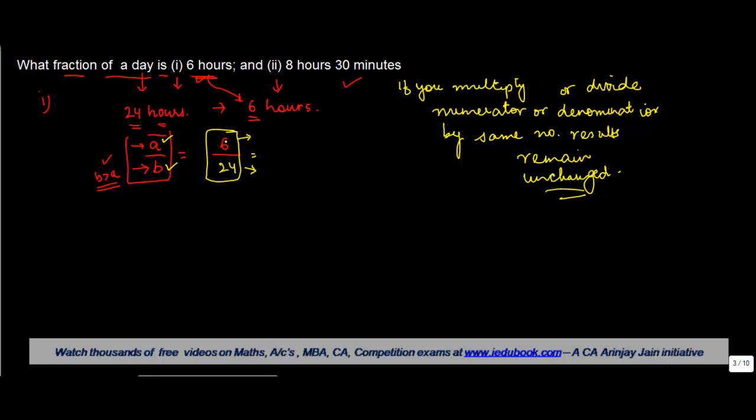If you notice these two numbers, both these numbers are divisible by 6. So what if I divide 6 by 6? I will get 1. If I divide 24 by 6, I will get 4. So I can also write this as 1 upon 4. This fraction in simplified form can be written as 1 by 4, if you divide both the numerator and the denominator by same number.